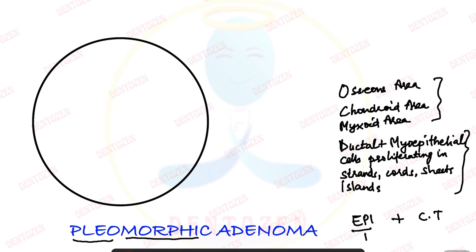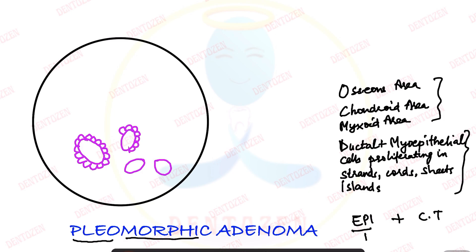Now let's draw these two components. First is the epithelial component. Duct-like structures of different sizes are lined by ductal cells, which appear cuboidal in shape. Around them we can see myoepithelial cells, which can acquire variable appearances — they can be spindle-shaped, angular, or plasmacytoid, that is plasma cell-like. We'll draw myoepithelial cells surrounding these ductal cells.